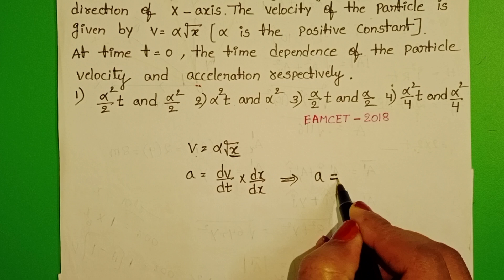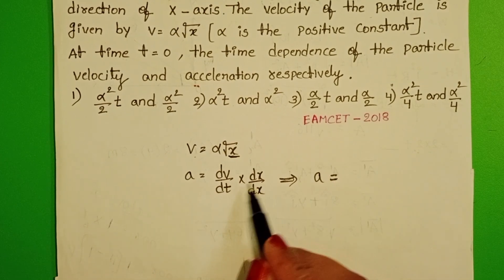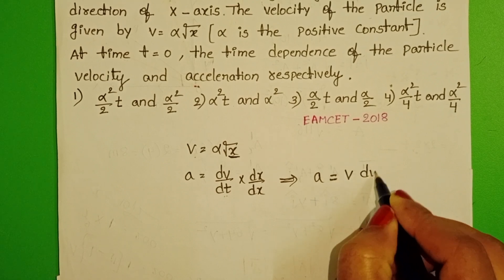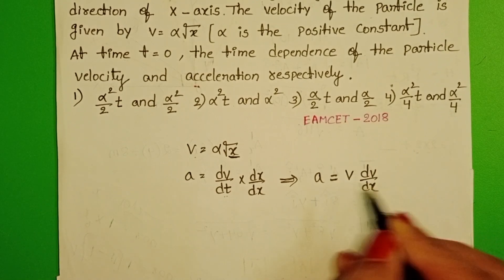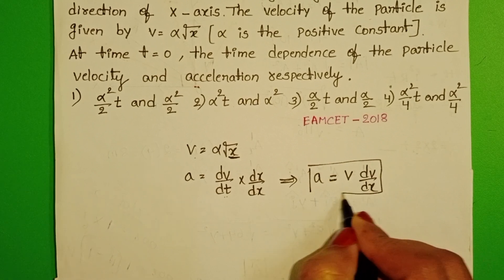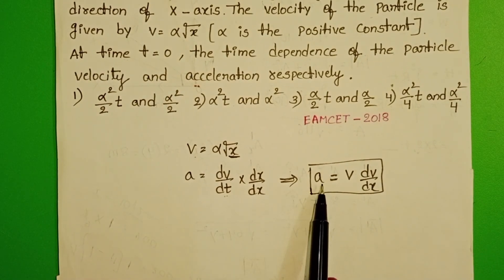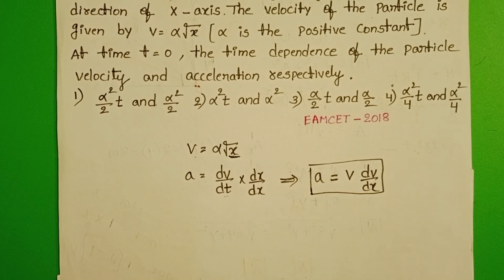Acceleration equals, we know displacement by time is velocity. V into dv by dx. Remember this, when velocity is a function of displacement, then take the formula of acceleration as v into dv by dx.